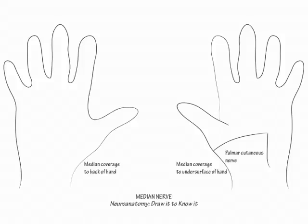Then, draw a line down the fourth digit and continue it to the wrist to show that the median nerve covers the lateral half of the ring finger, middle and index fingers, and the thumb.